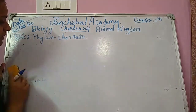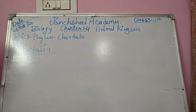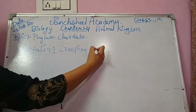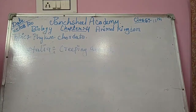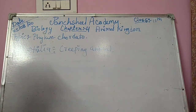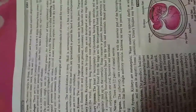Now we are discussing about the fourth class, that is Reptilia. Reptilia means creeping animals — dinosaurs, chameleons, and all such animals are creeping animals included in this category.